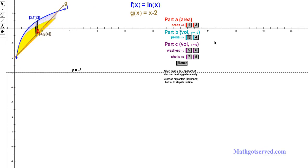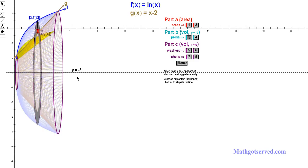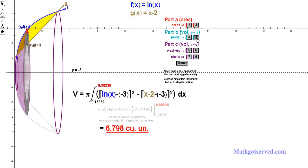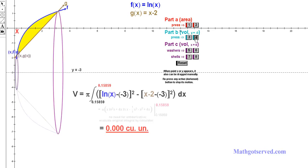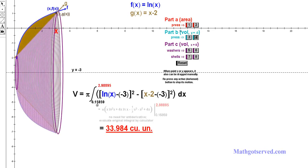If we take that area and rotate it around y equals negative 3, we can see that y equals negative 3 is clearly beneath the two functions. There goes our slice — that little washer we were trying to create. To find the volume, we just integrate — find the accumulation of all the tiny washers by integrating from the lower x-value all the way to 3.14619. That gives you the volume of the resulting solid.